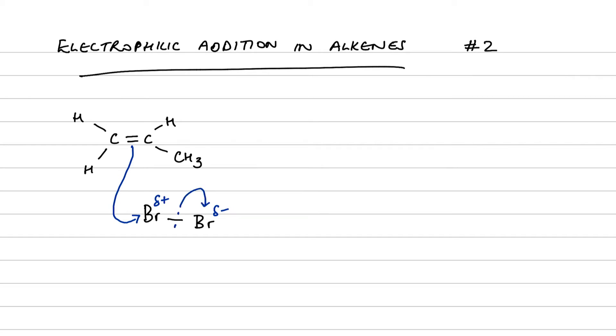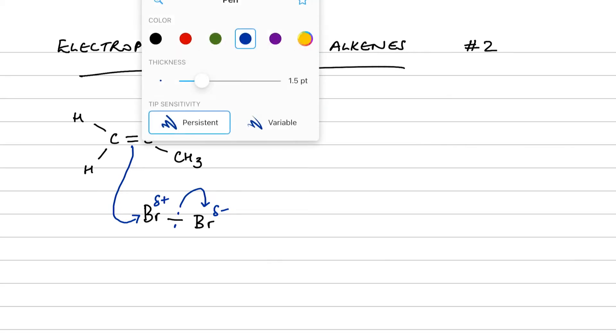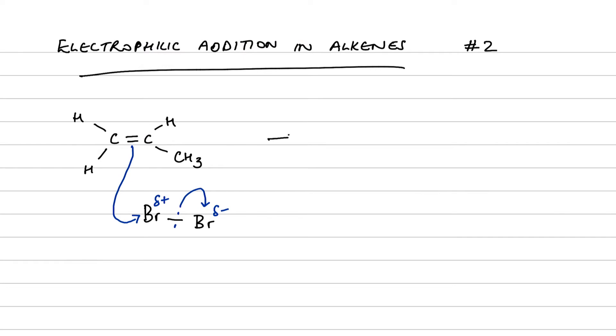And as we saw before, the other bromine atom then leaves, taking both the electrons in the bond with it. So this is another example of heterolytic fission. We are going to form our intermediate carbocation.